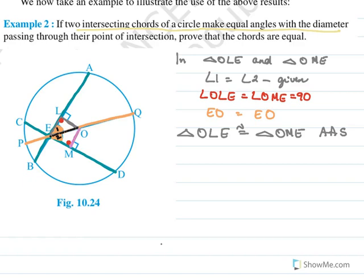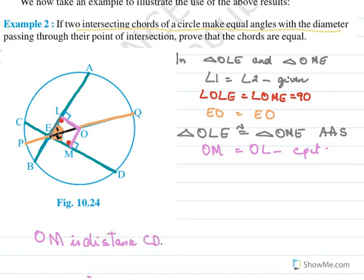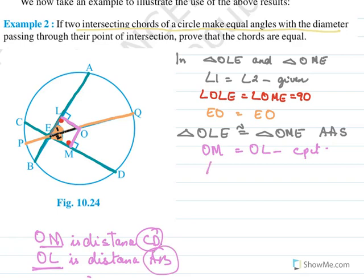By CPCT, OL equals OM. But OL is the distance of AB from the center, and OM is the distance of CD from the center. Since their distances are equal, the chords are also equal. Therefore chord CD equals chord AB, by the theorem that equidistant chords are equal.